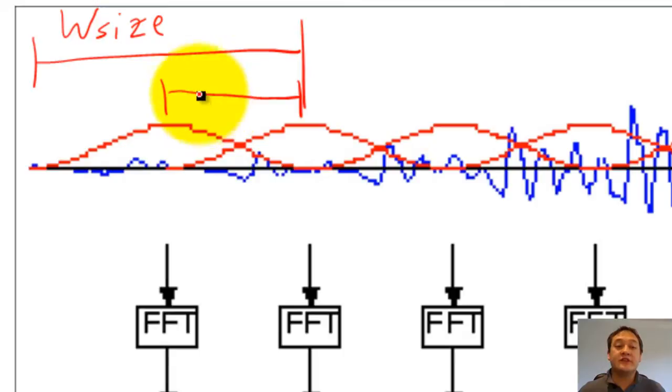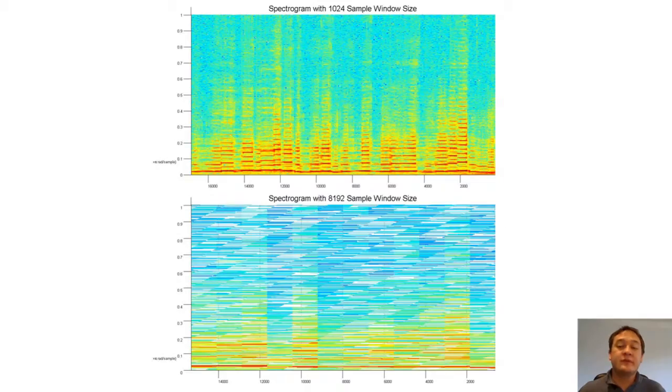If we increase our window size too much, we will not be able to accurately see how the frequency content changes over time. For example, notice how the 8192 sample window size looks blurry and looks the same over all time.